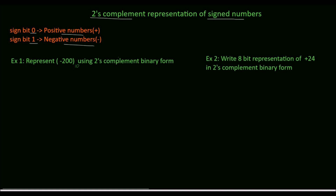First we will solve Example 1. We have to represent the decimal number minus 200 using 2's complement binary form. First we will convert the decimal number 200 into binary.